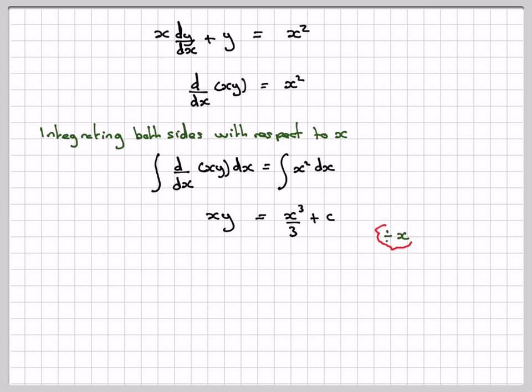We need to make y the subject. Dividing through by x, we get y equals x squared over 3 plus c over x. This is the general solution of the original differential equation.